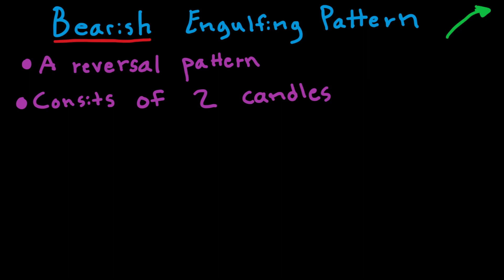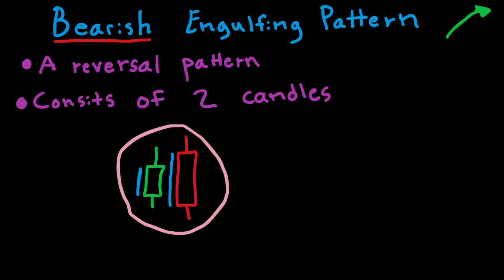We can make a quick sketch of how the bearish engulfing pattern looks. The first candle is a green one, and the second candle is a red one. The important thing is that the real body of the red candle has to be larger than the real body of the green candle — the real body being the rectangular portion of the candle. So the red rectangle has to be longer than the green rectangle.